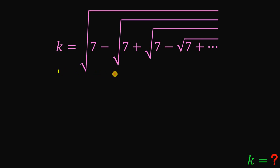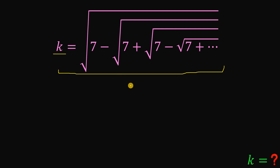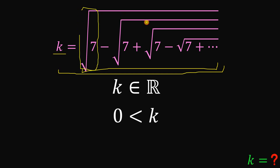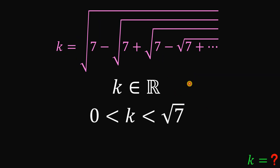Given this equation, k equals the square root of 7 minus the square root of 7 plus the square root of 7 minus the square root of 7 plus, continuing until infinity. The goal is to find the value of k. One thing is for sure: k is a real number because the value of k is this nested radical right over here. We can approximate the value of k. First, k must be greater than 0, and also k must be less than the square root of 7. So k is greater than 0 but less than the square root of 7. We will use this fact to answer this question.